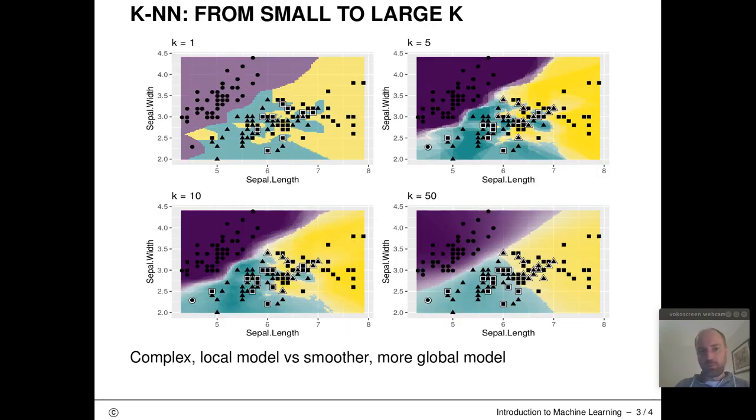This effect you can also see here visually. So again, I have considered here this 2D slice of the iris data set. And I have now colorized the decision regions and decision boundaries for a KNN algorithm where I vary k from a very small value of k equals 1 to larger values. So 2k equals 5, k equals 10, and k equals 50.